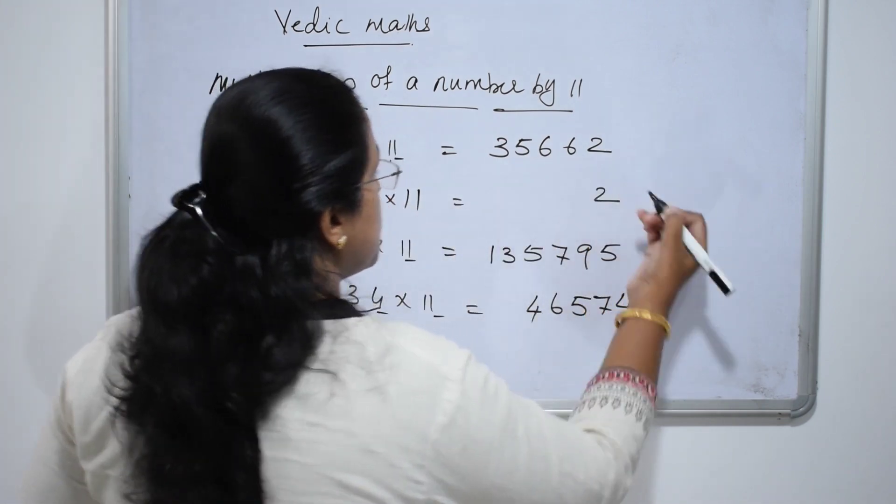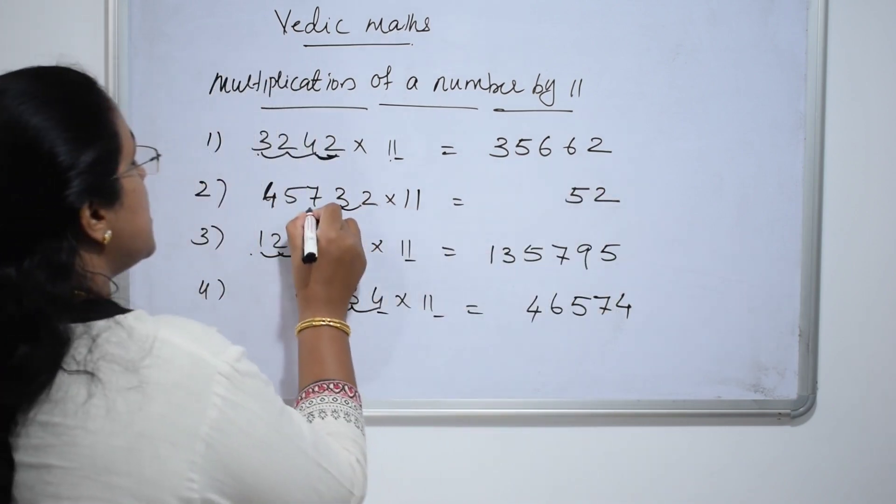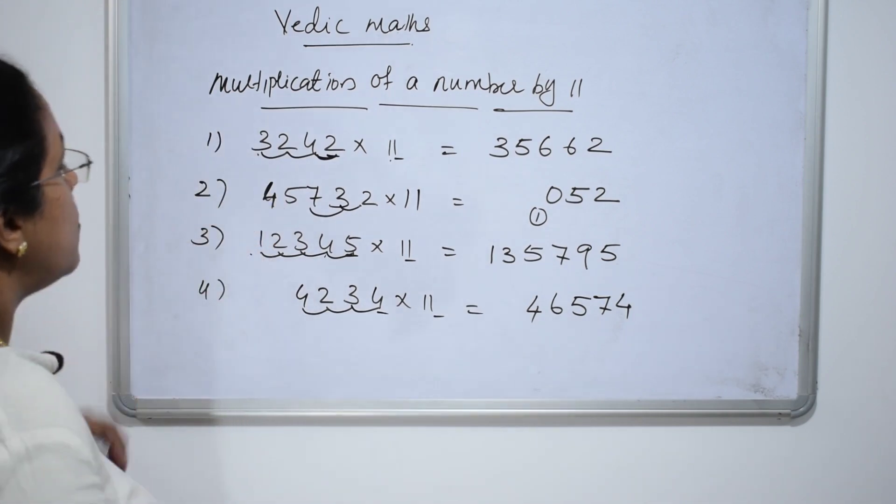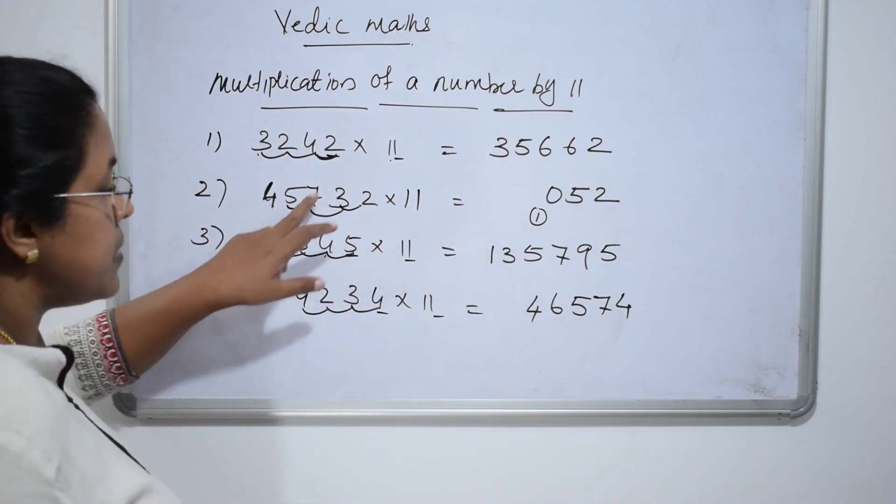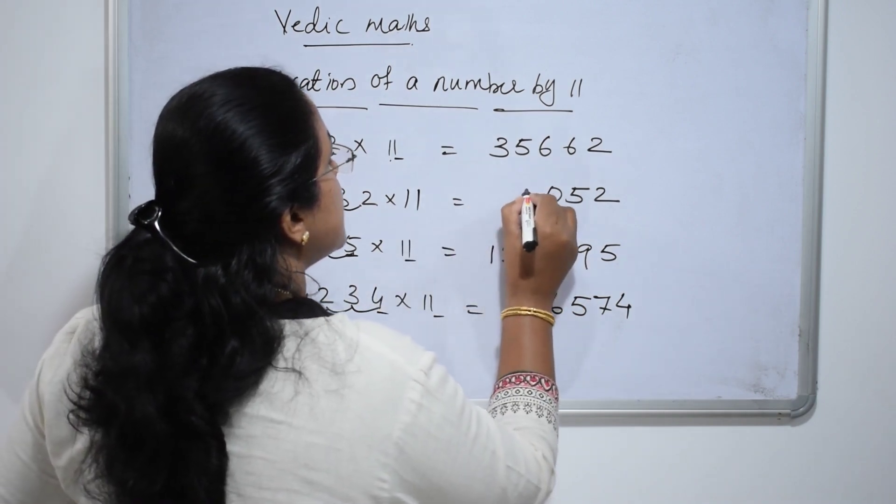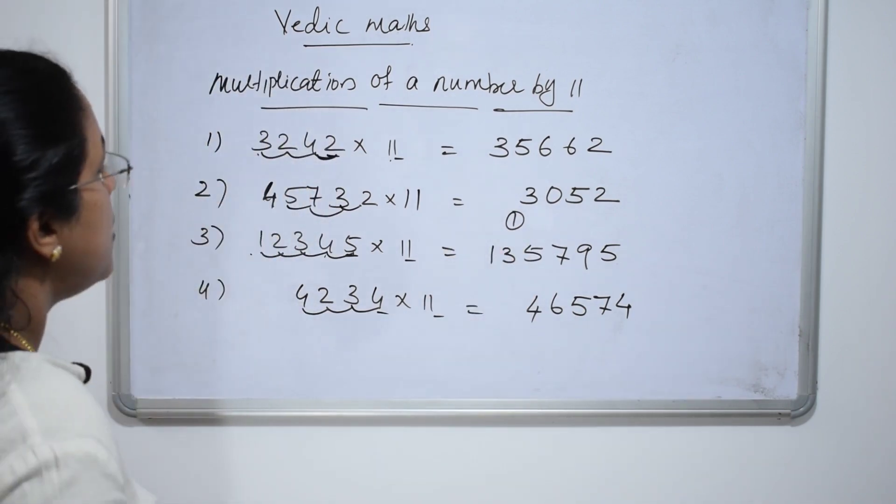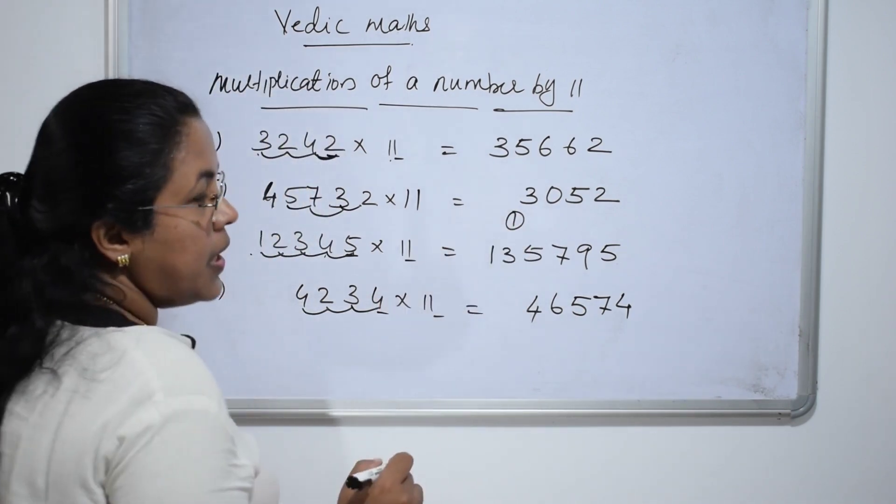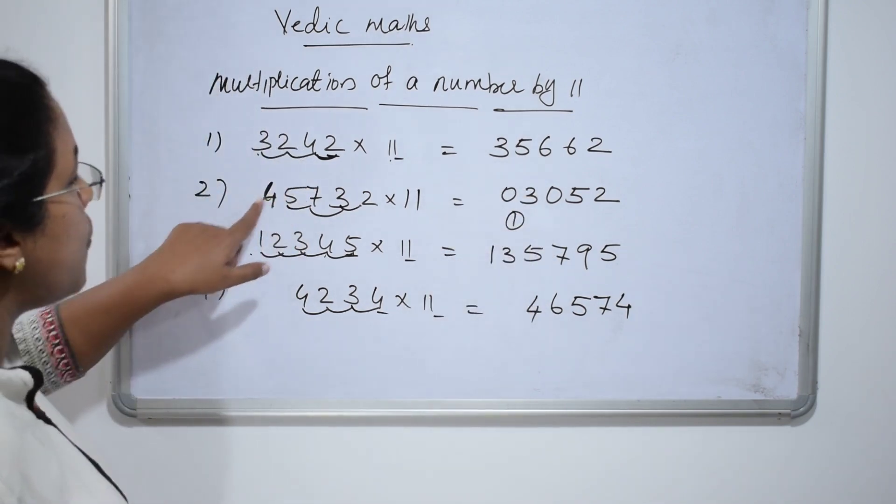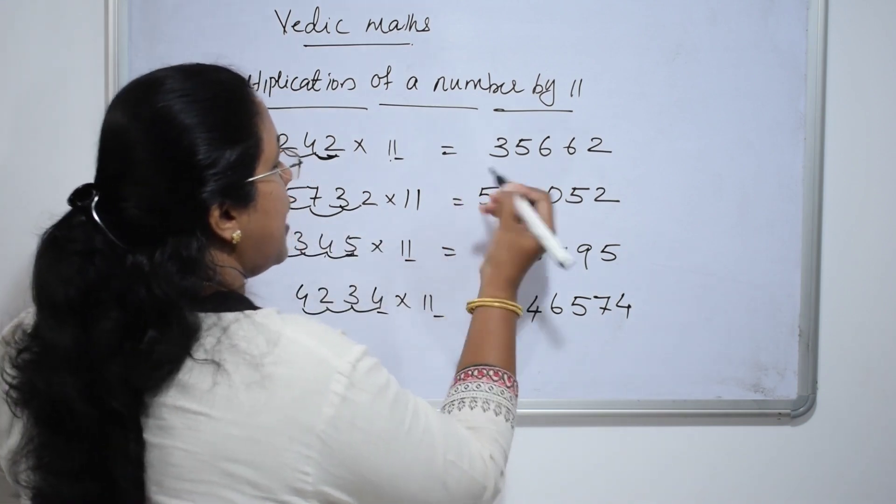2 into 1, 2. 2 plus 3, 5. 7 plus 3, 10. Carry over 1 is there. Now, 7 plus 5, 12. 12 plus this carry over 1 makes it 13. Again, carry over 1. 5 plus 4, 9. Plus 1, 10. 0. Again, carry over 1 is there. 4 times 1 is 4. Plus carry over 1 makes it 5. Isn't it very easy?